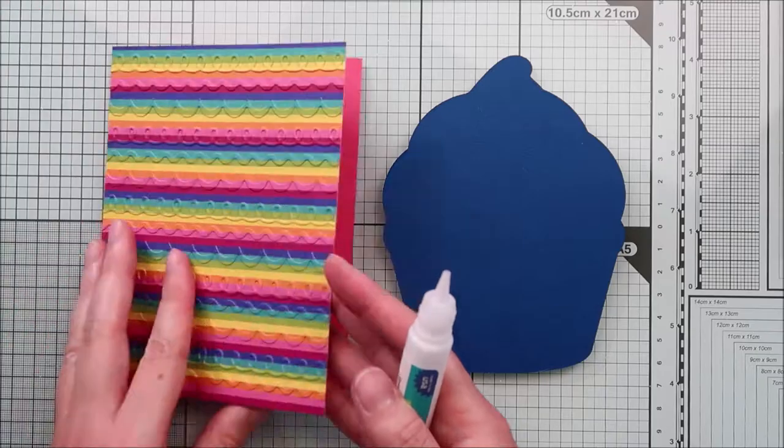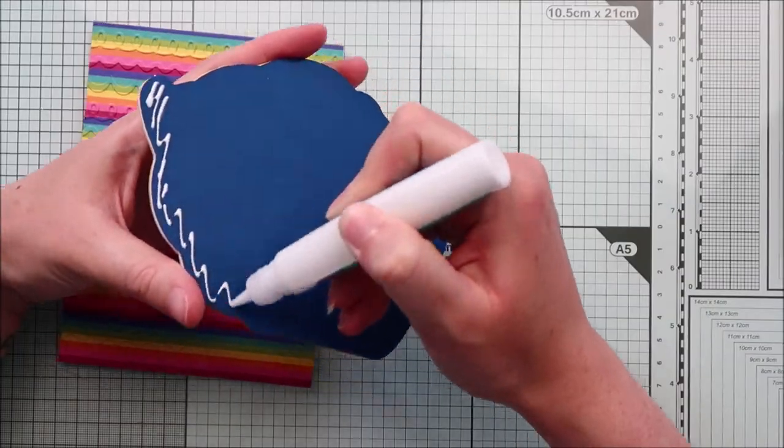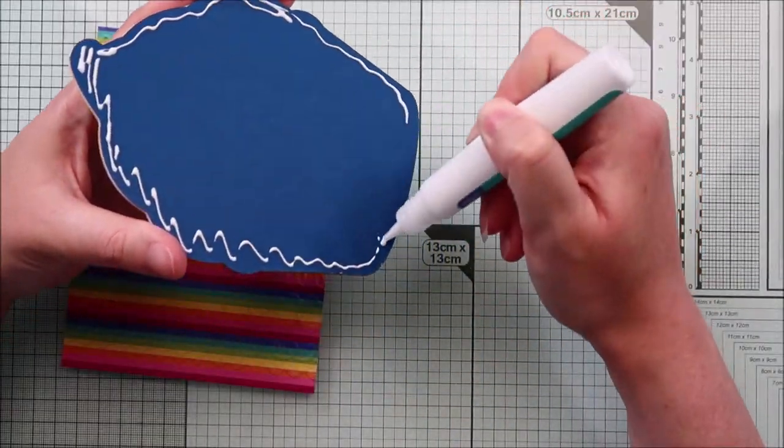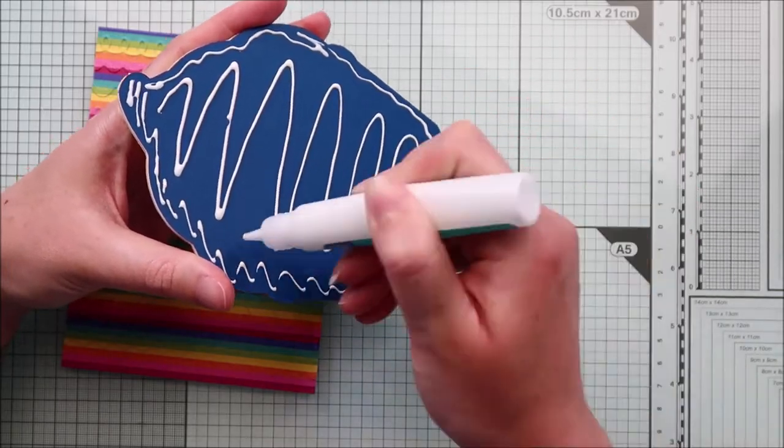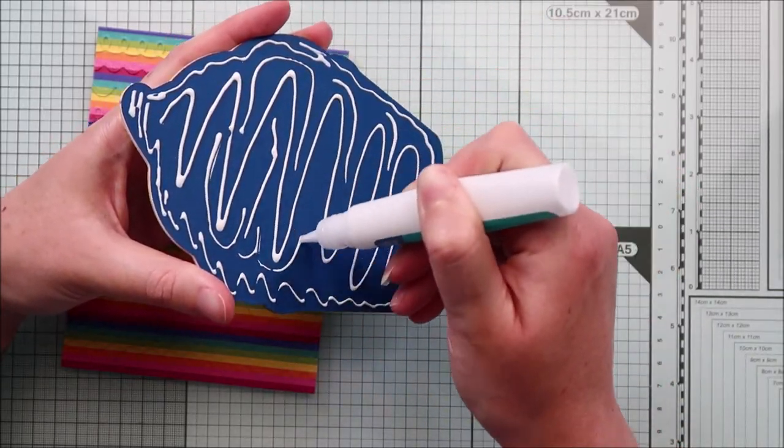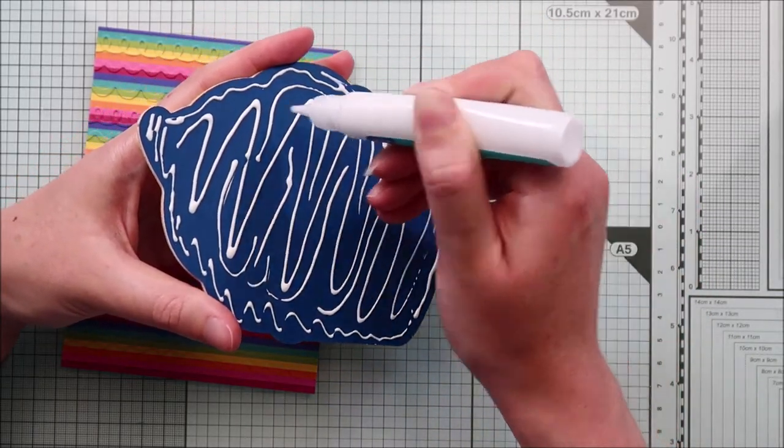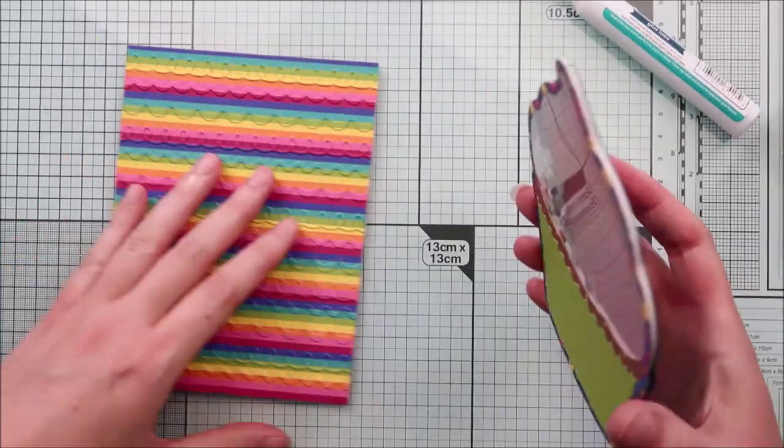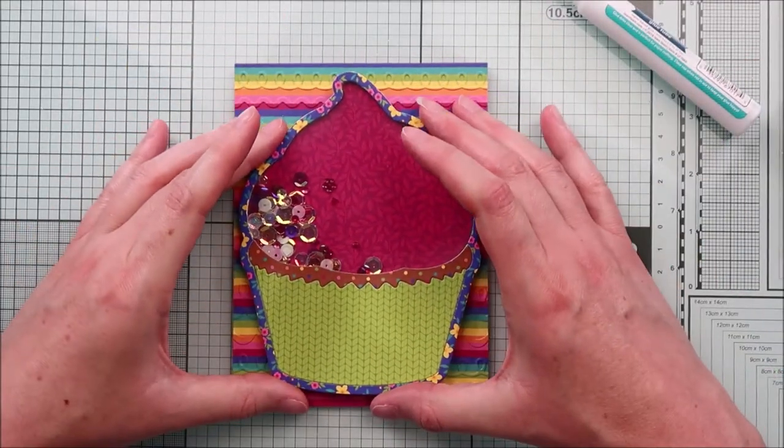So I filled the entire panel with icing borders, I trimmed the edges and stuck the panel to a pink card base. And then I attached my giant shaker cupcake on my custom background.